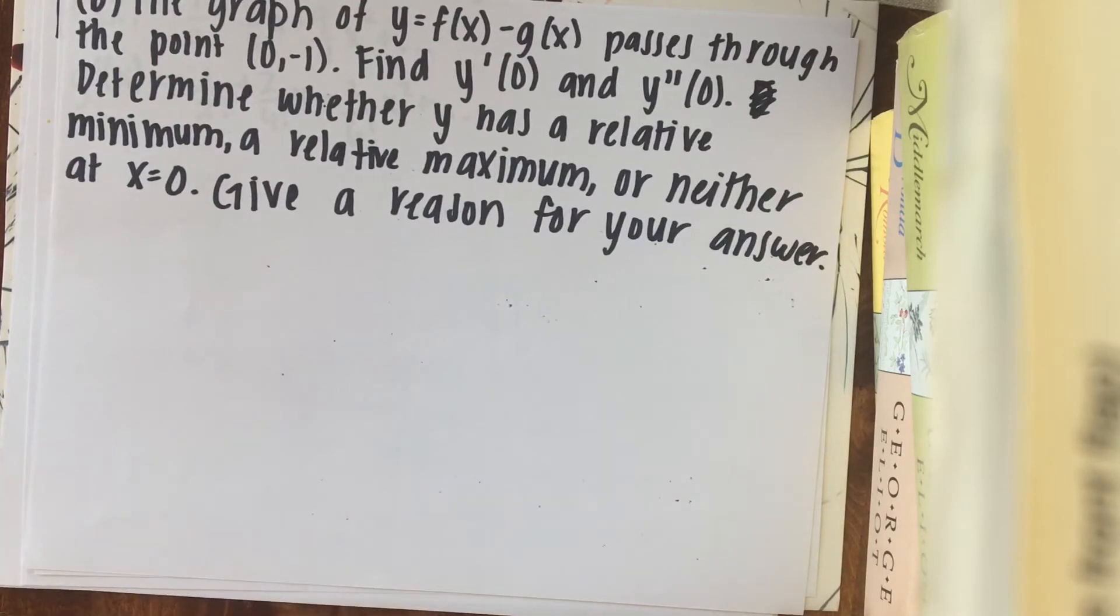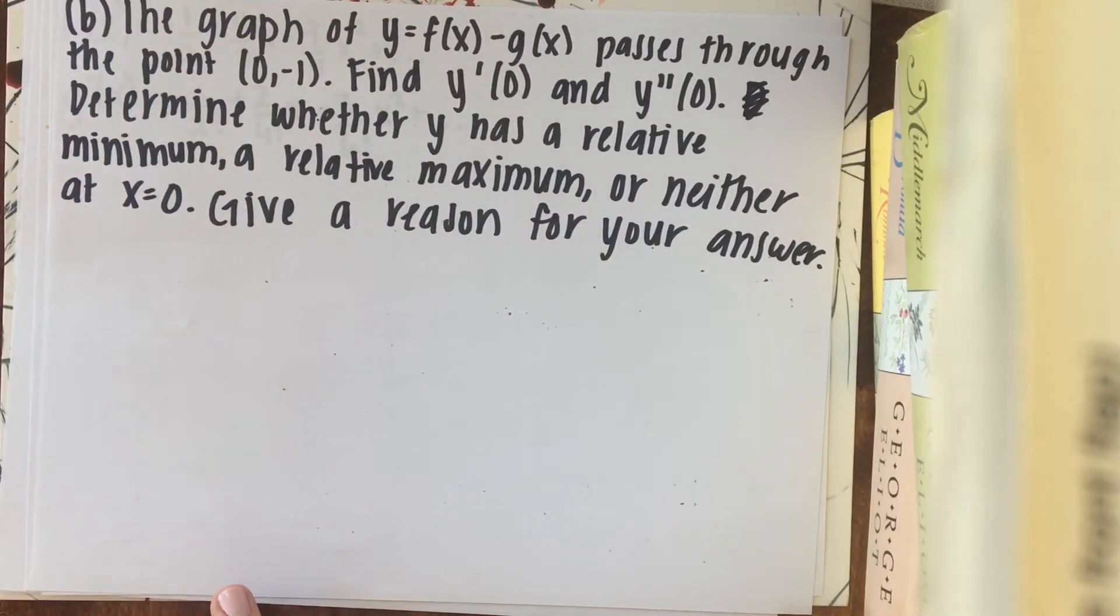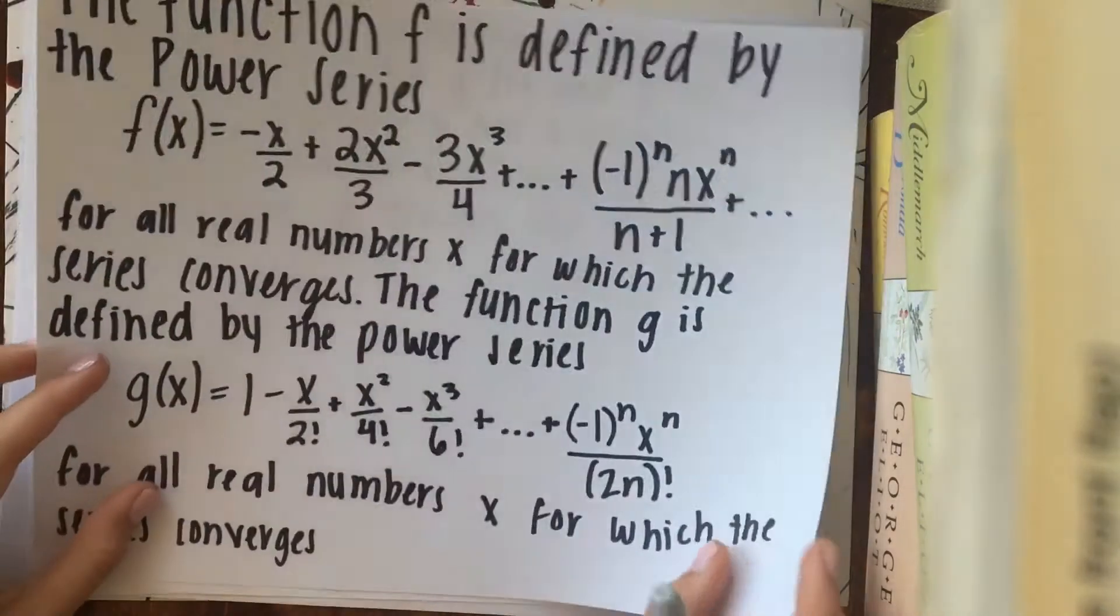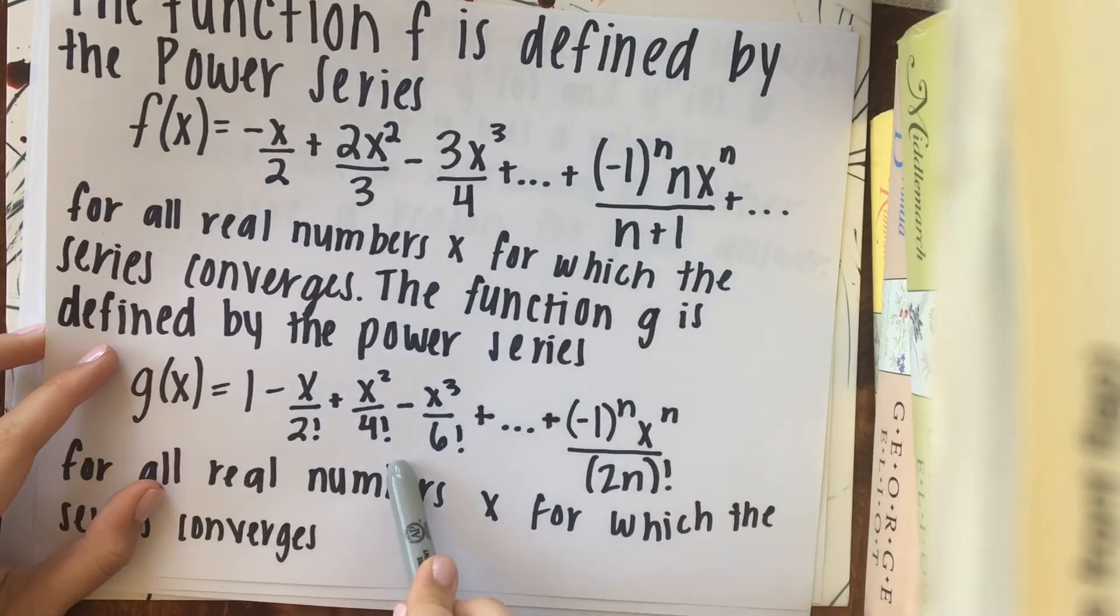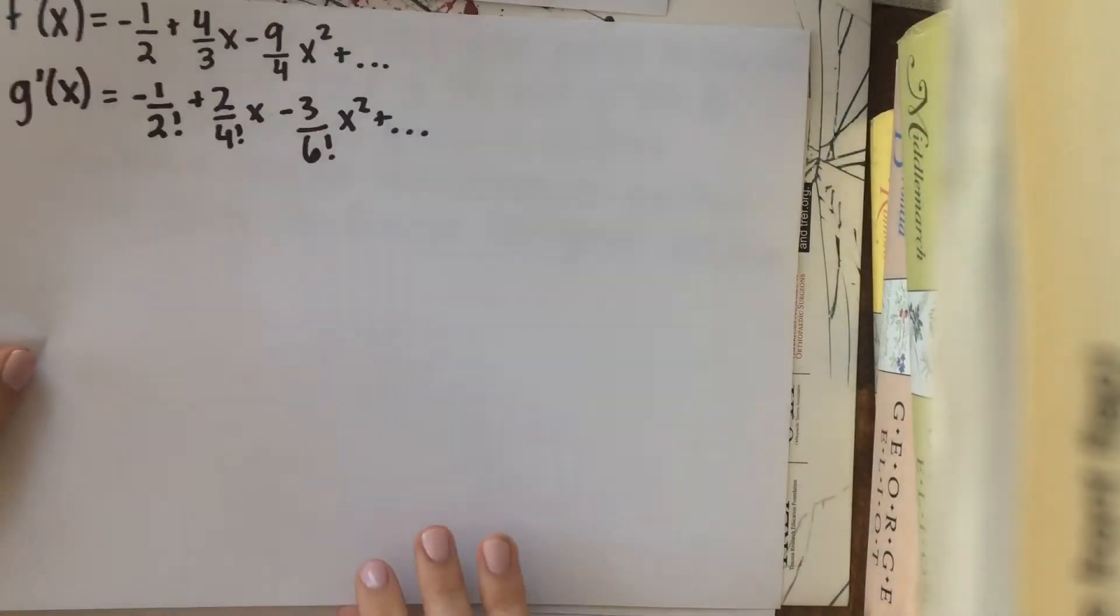Now for part b, they're asking us, given the graph of y equals f of x minus g of x passes through the point 0 comma 1, find y prime of 0 and y double prime of 0. Determine whether or not y has a relative maximum, a relative minimum, or neither at x equals 0. Give a reason for your answer. So to start off, I'm going to just compute f prime of x and g prime of x. So if you remember before, they gave us f of x here and g of x here. So I just took the derivative. And it's right there.